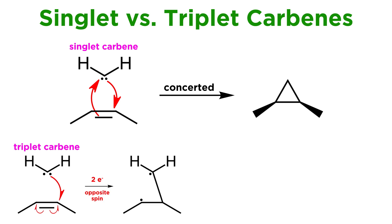First, one bond forms between two electrons of opposite spin. But then the other two electrons have the same spin, and therefore cannot pair directly. The system must wait until one of them flips to the opposite spin, either via radiative emission (also known as phosphorescence), by spin-orbit coupling, or some other process. This is typically rather slow, and only once this has occurred may the second bond form.